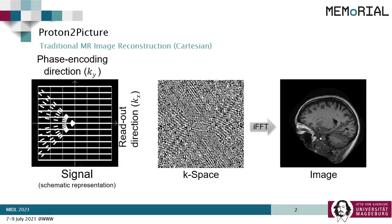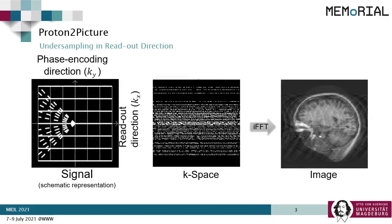MRI is not directly acquired in the image space, but in the frequency space, which is called the K-space. The inverse Fourier transform is applied on the K-space to obtain the final image. By ignoring parts of the data, the scan time can be reduced, but might result in artifacts due to the violation of the Nyquist criterion. This work focuses on improving such images with under-sampling artifacts.